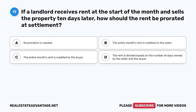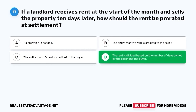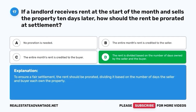Question 17. If a landlord receives rent at the start of the month and sells the property ten days later, how should the rent be prorated at settlement? A. No proration is needed. B. The entire month's rent is credited to the seller. C. The entire month's rent is credited to the buyer. D. The rent is divided based on the number of days owned by the seller and the buyer. The correct answer is D. To ensure a fair settlement, the rent should be prorated, dividing it based on the number of days the seller and buyer each own the property.